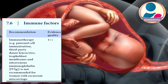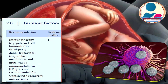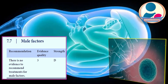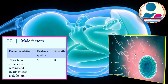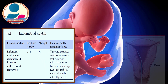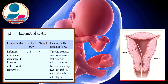Immunotherapy — including paternal cell immunization, third-party donor leukocyte infusion, trophoblastic membrane infusion, and intravenous immunoglobulin — is not recommended for women with recurrent miscarriages. There is no evidence to recommend treatment for male factors. Endometrial scratch is also not recommended in women with recurrent miscarriages.